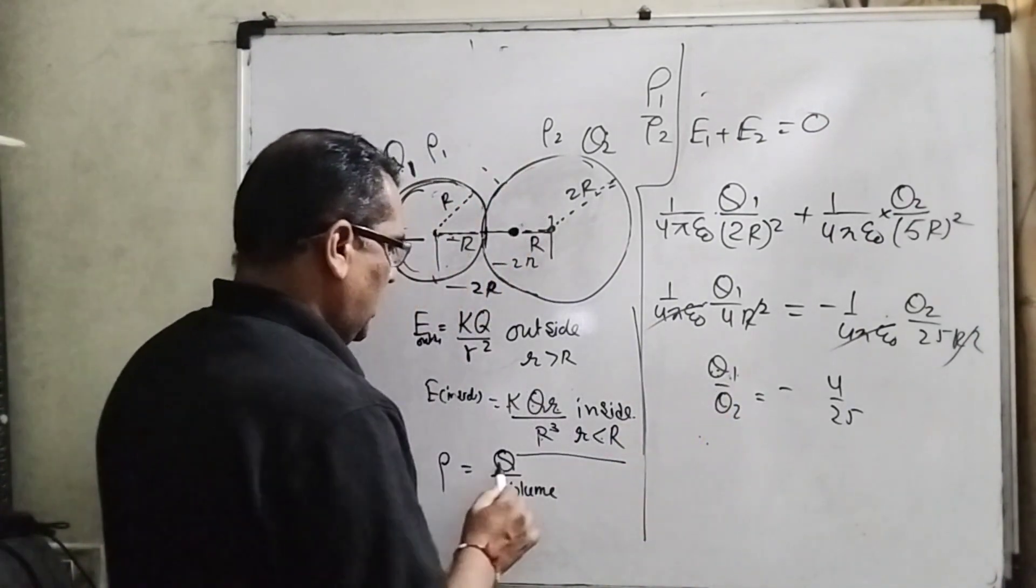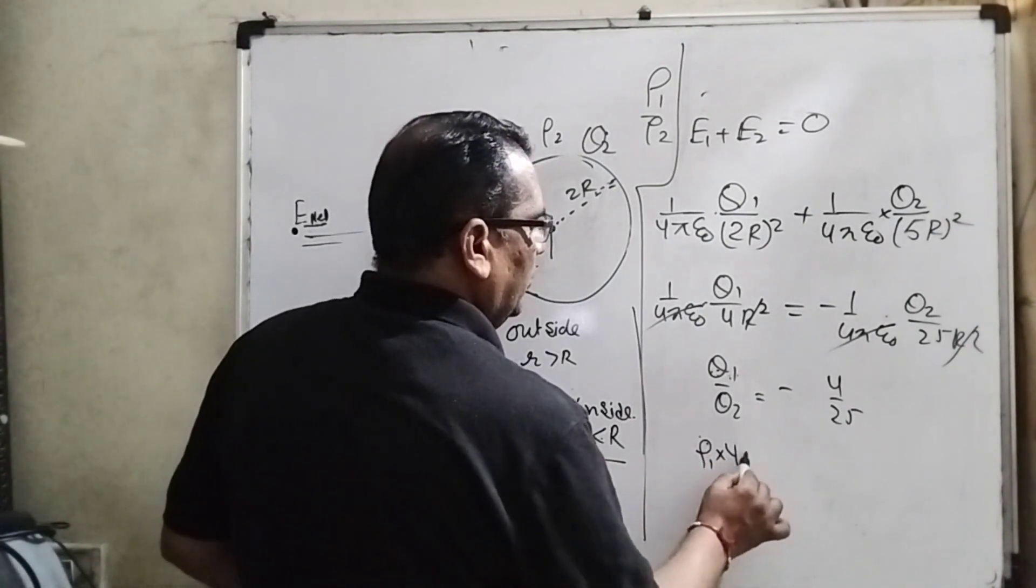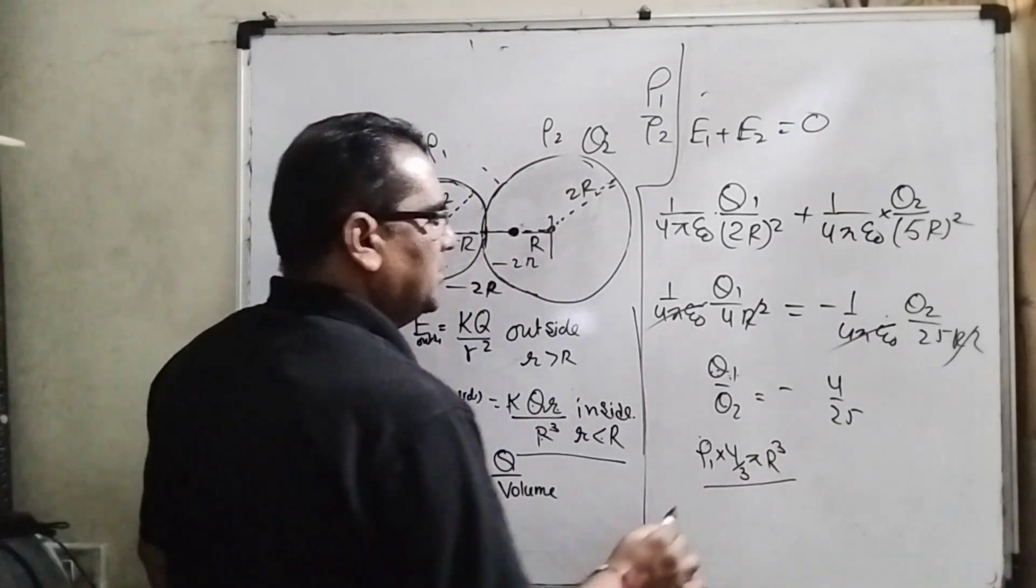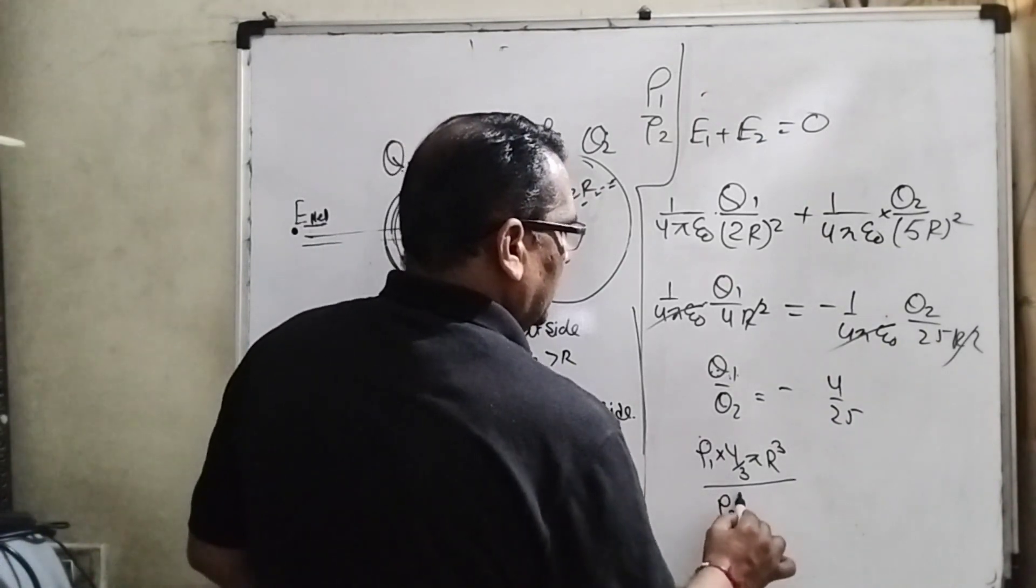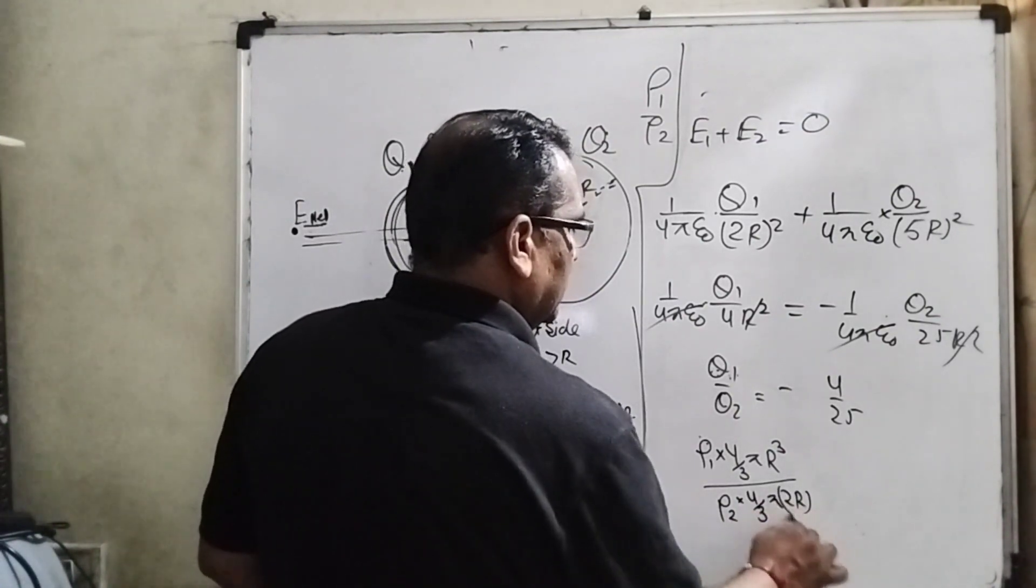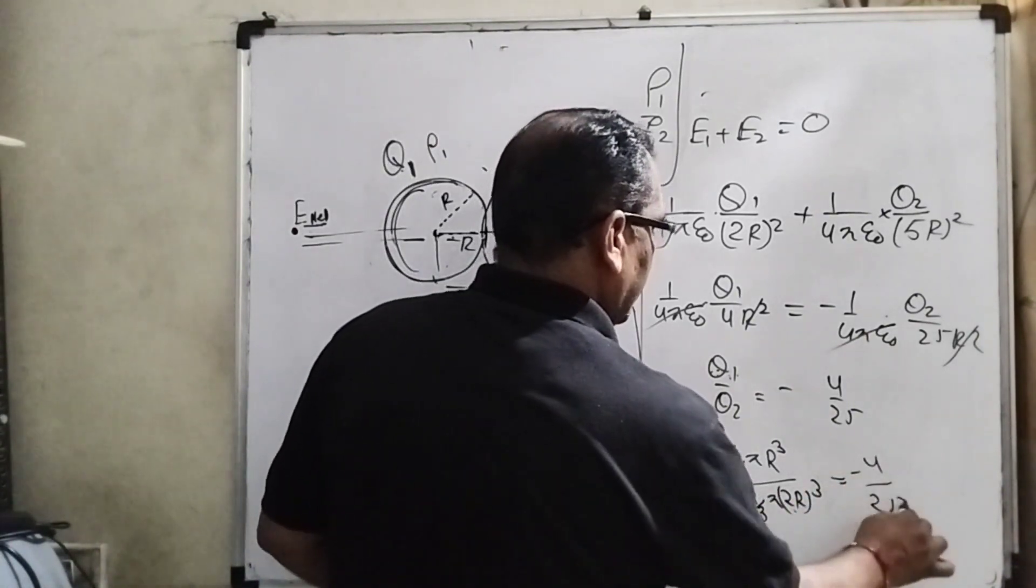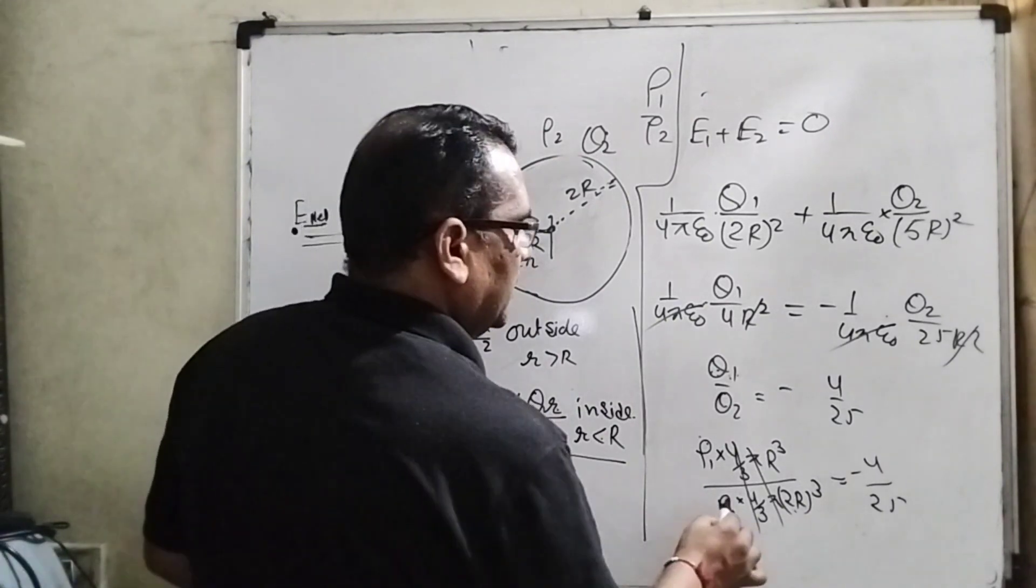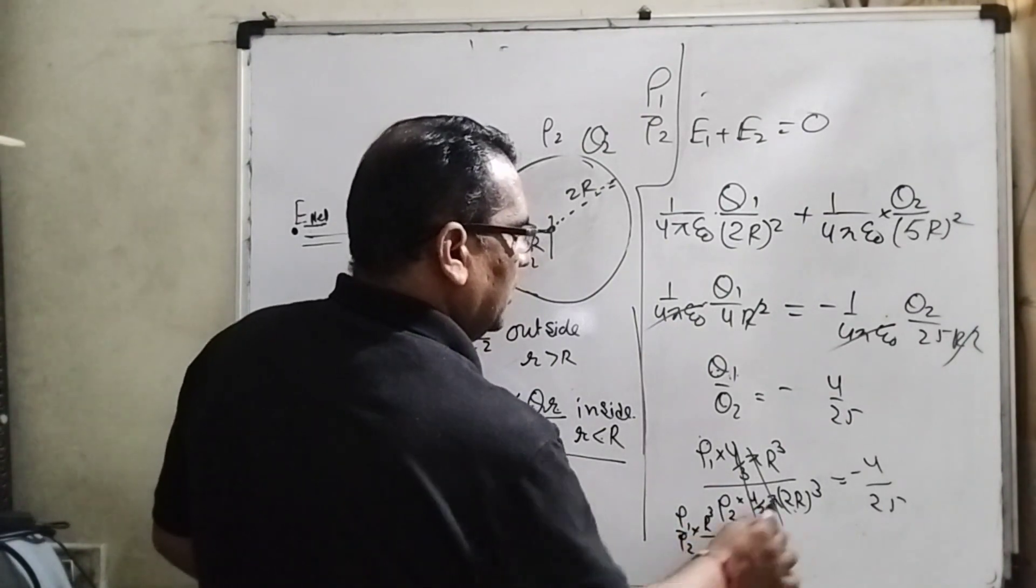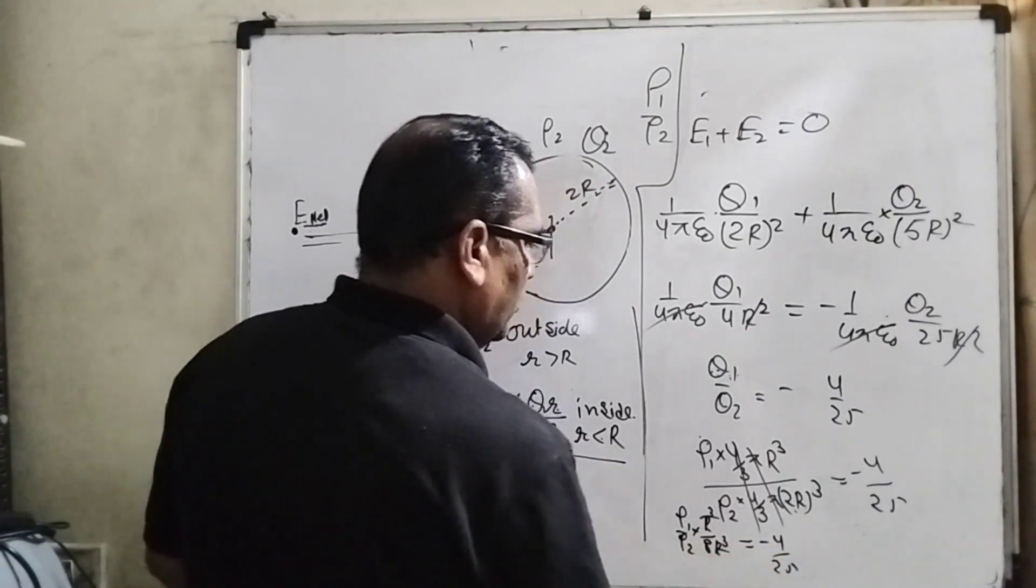So here what is the charge? Charge can be written as rho 1 and 4 by 3 pi r cubed, and this is rho 2, 4 by 3 pi, and the radius is 2r cubed equal to minus 4 by 25. This will cancel out and here rho 1 upon rho 2, r cubed, 8r cubed equal to minus 4 by 25. R cubed cancel.